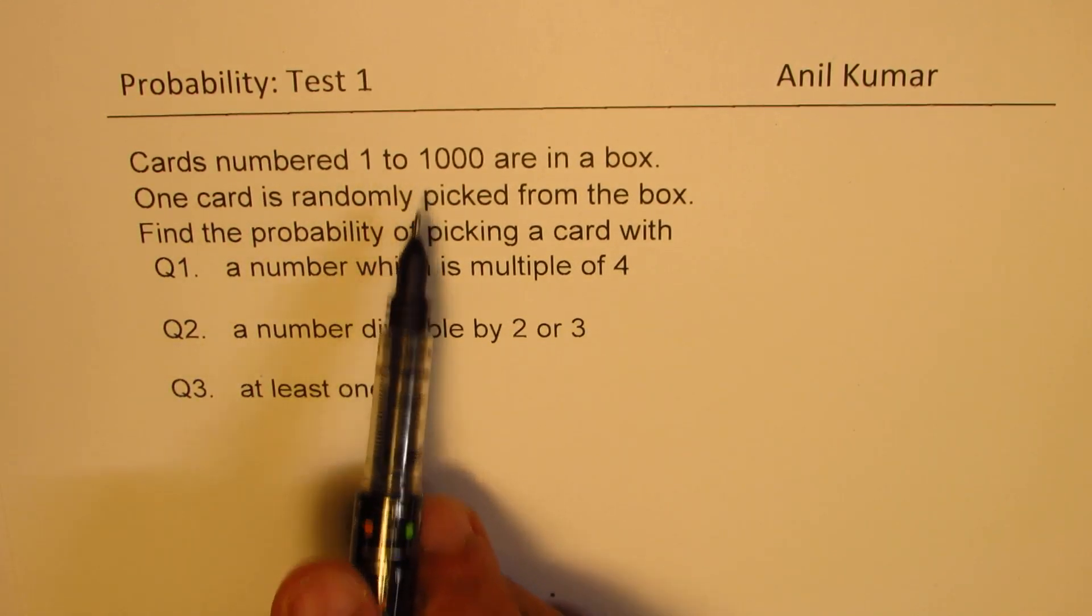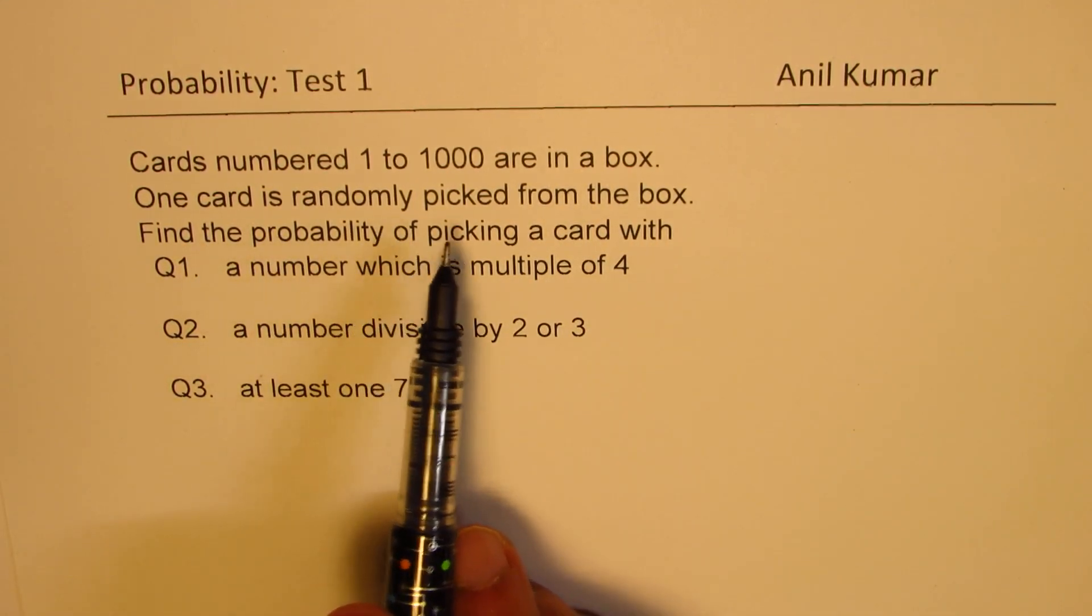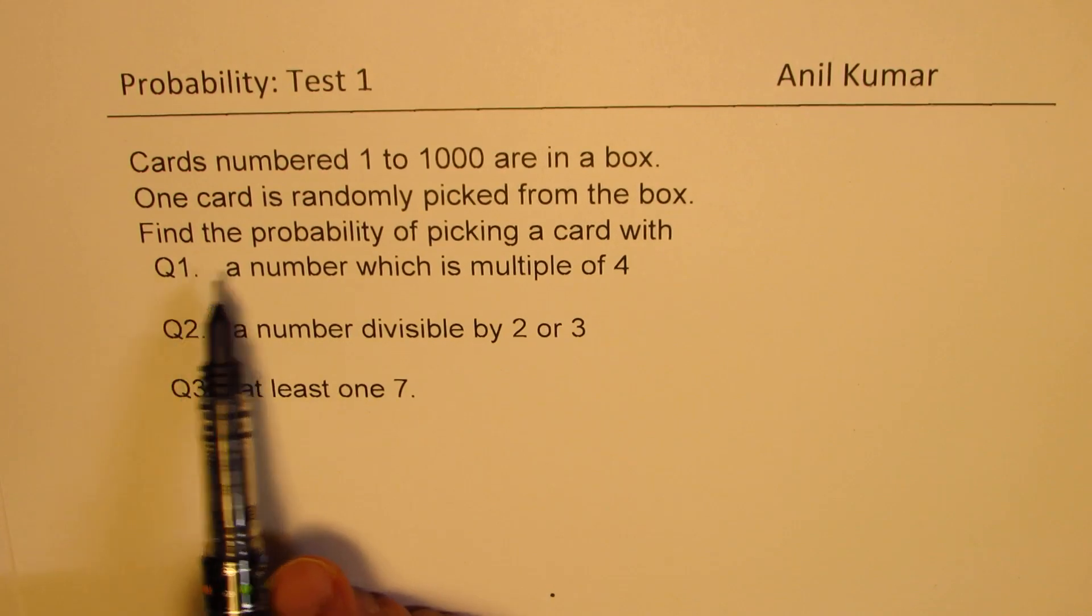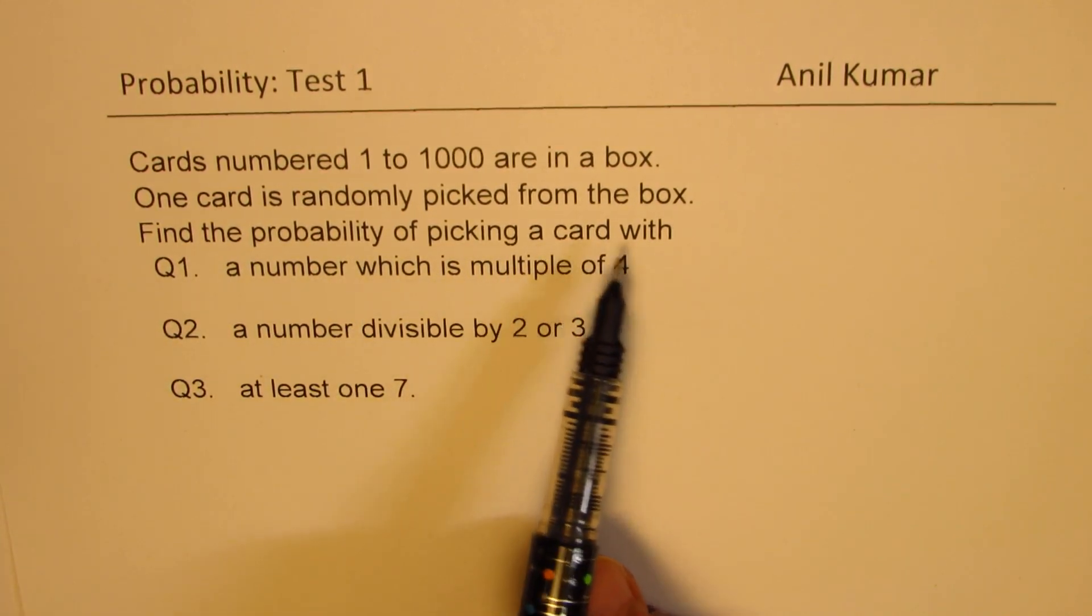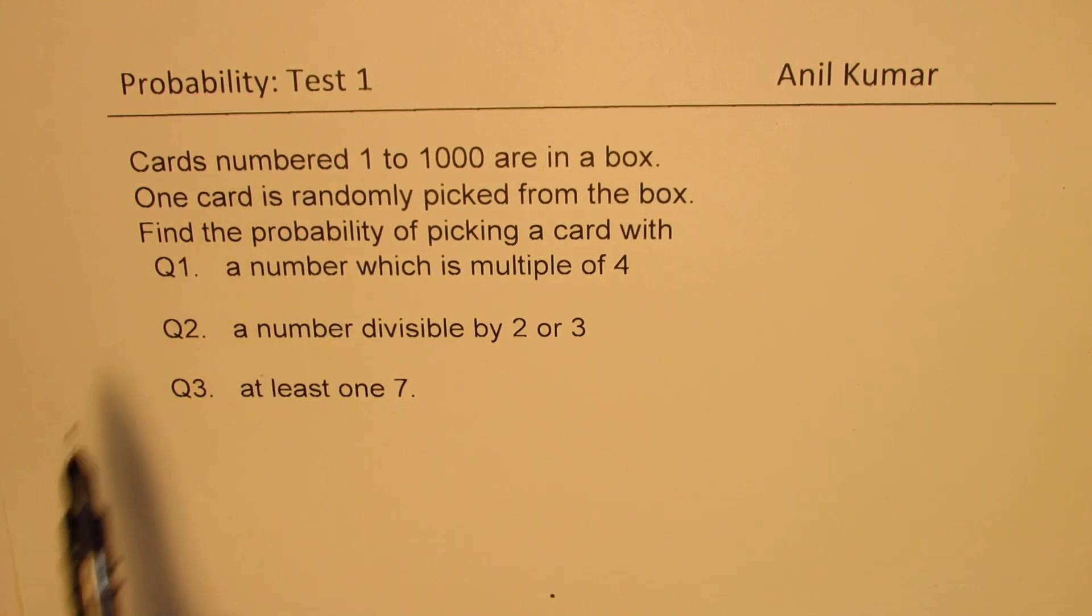Cards numbered 1 to 1000 are in a box. One card is randomly picked from the box. Find the probability of picking a card with—now, there are three different questions based on this information.